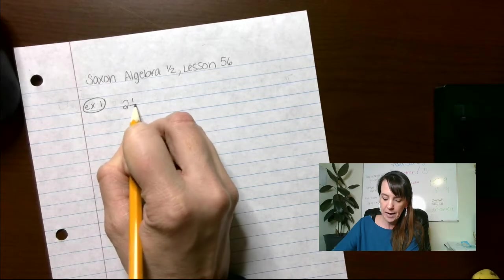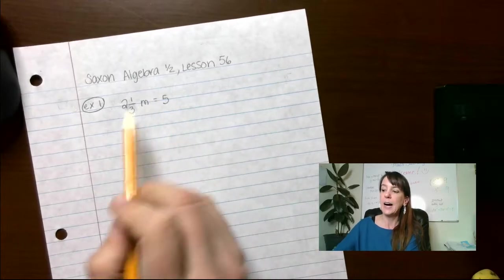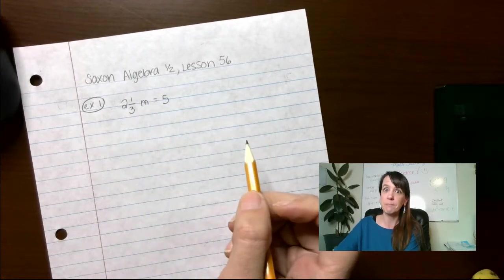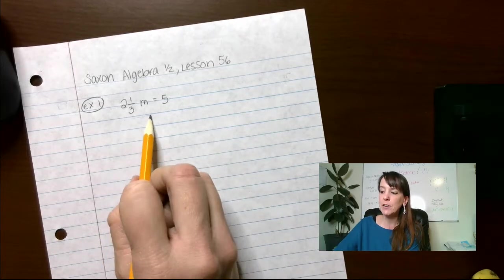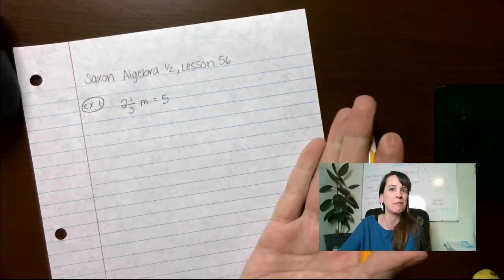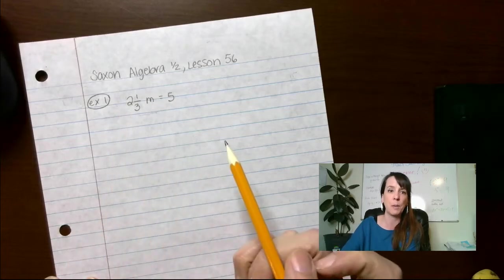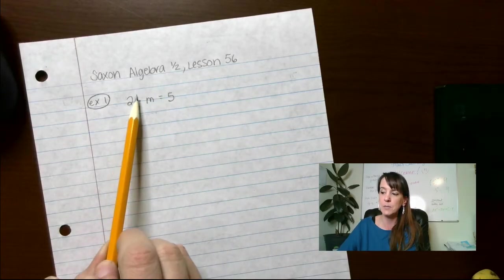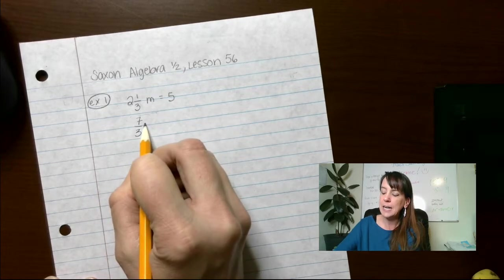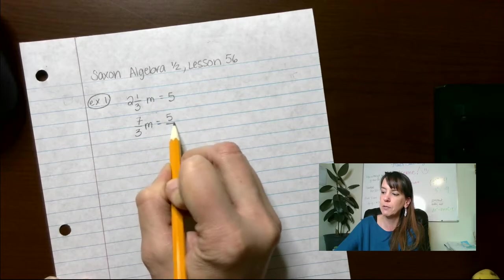So we have two and one-third m equals five. The operation that's going on between two and one-third and m is multiplication, right? The opposite of multiply is divide, but we never divide. If I divide this by two and one-third, I would have to divide this, but we don't divide by fractions. First things first, before we even get into that, we've got to turn this into an improper fraction. Three times two is six plus one is seven. Seven over three times m equals, and I'm going to make this into a fraction since I'm dealing with fractions, five over one.